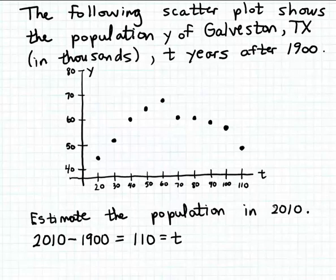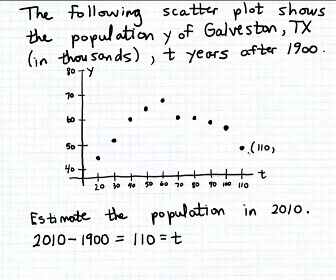To answer this question, we just need to find the point on the scatter plot which corresponds to a t value of 110. That's very clearly this point here on the far right. So let's estimate the coordinates of that point. The first coordinate is 110, and we just have to estimate the second coordinate, which looks to be about 48.